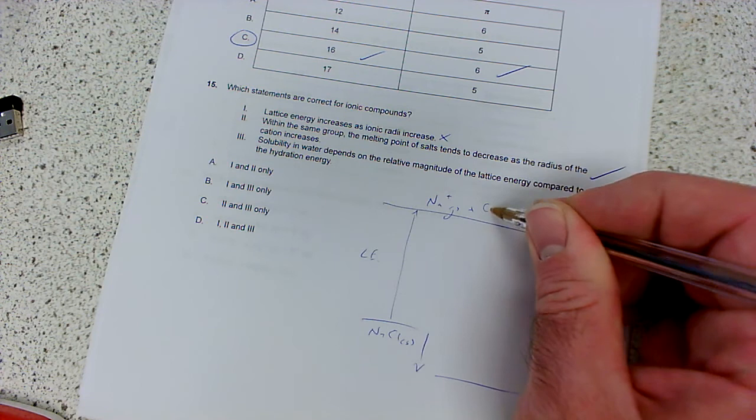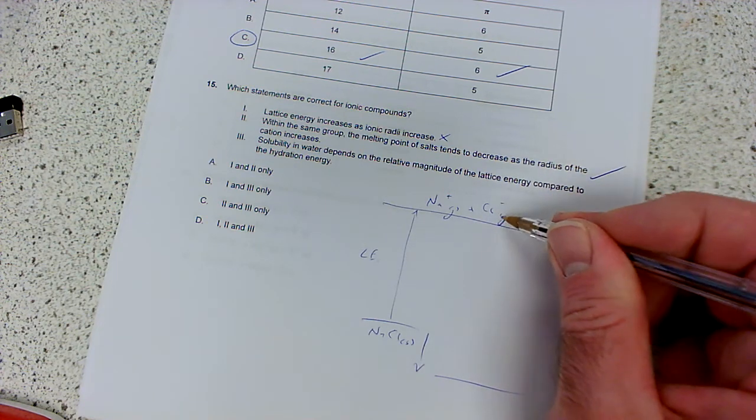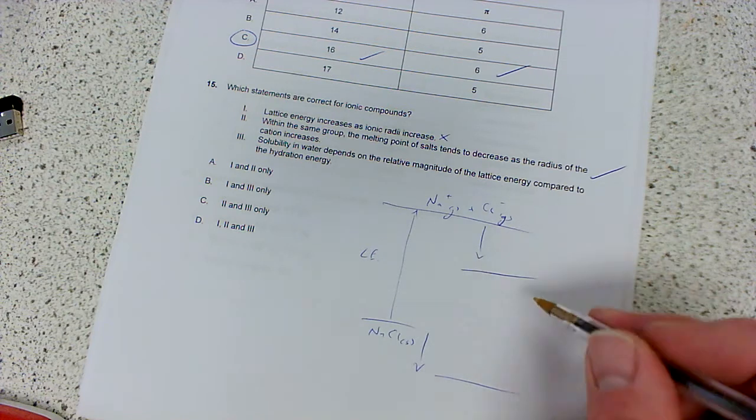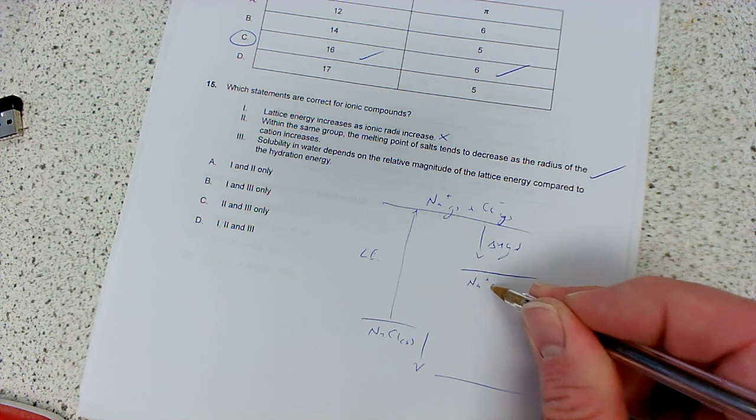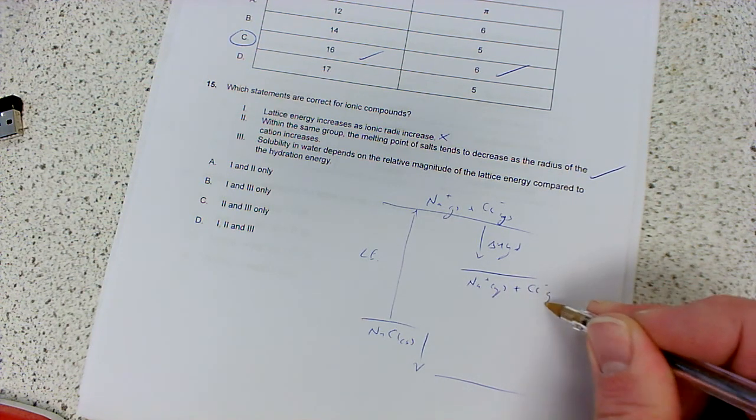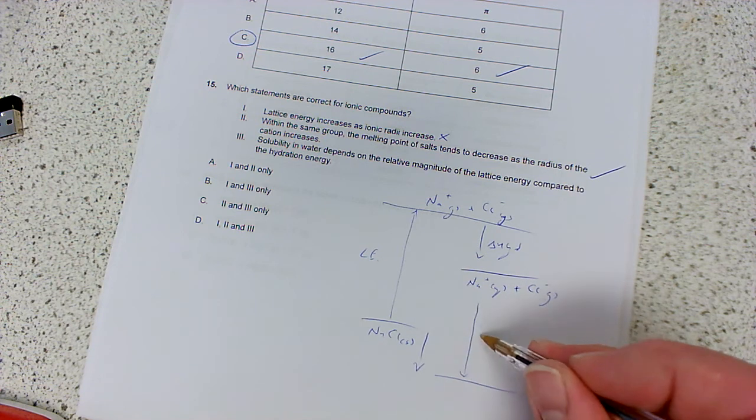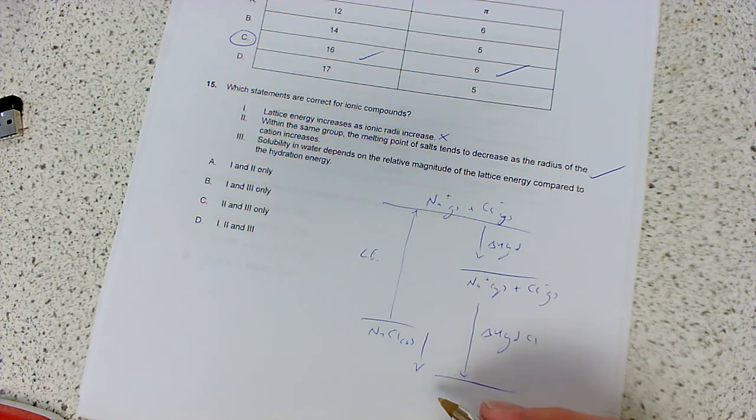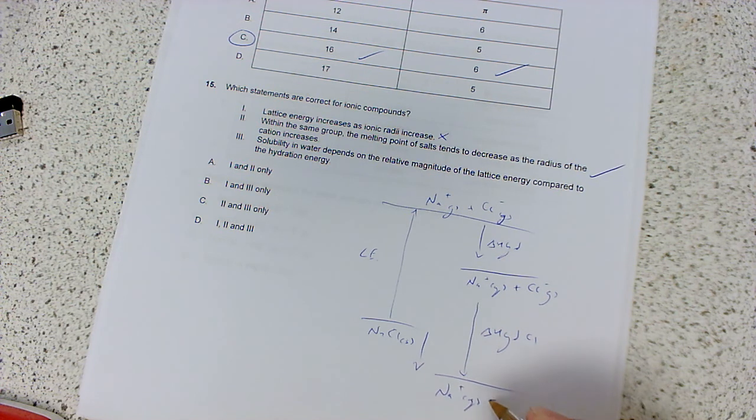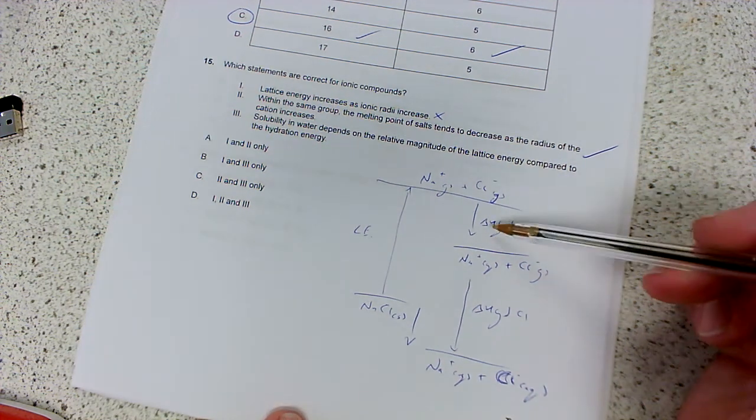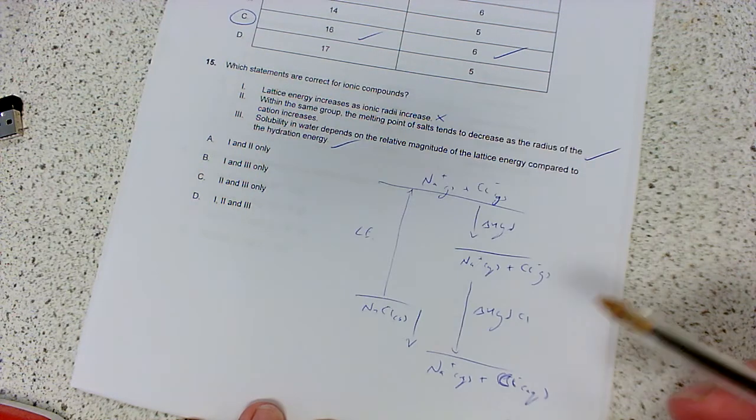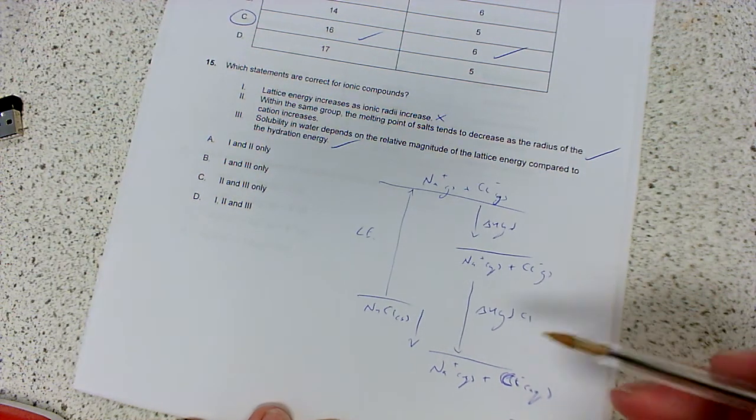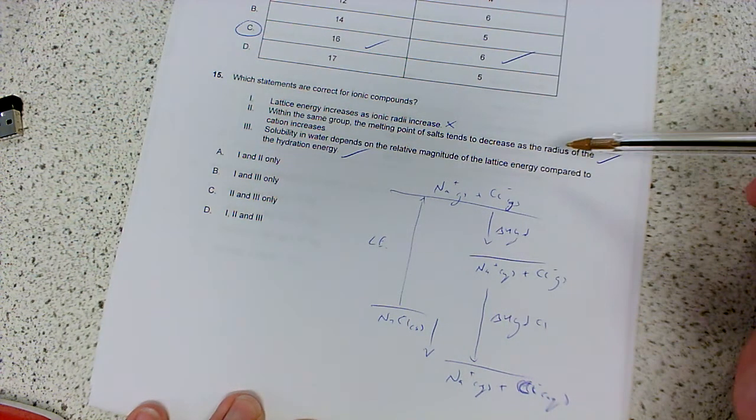Solubility in water depends on the relative magnitude of the lattice energy compared to the hydration energy. If you think about how we calculate the enthalpy of a solution, you'd have the lattice energy where it goes from solid sodium chloride to gaseous ions, then you get your enthalpies of hydration where you dissolve them - first the sodium ions, then the chloride. We do have to compare the enthalpy of hydration with the lattice energy, so I agree with that statement as well. That's two and three only, so that would be C.